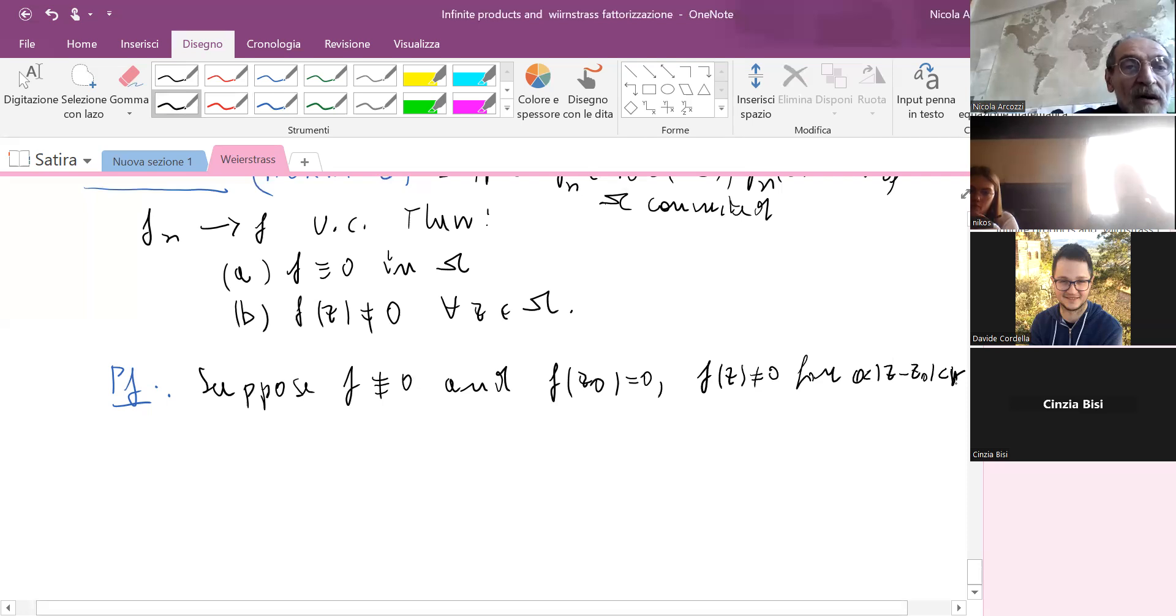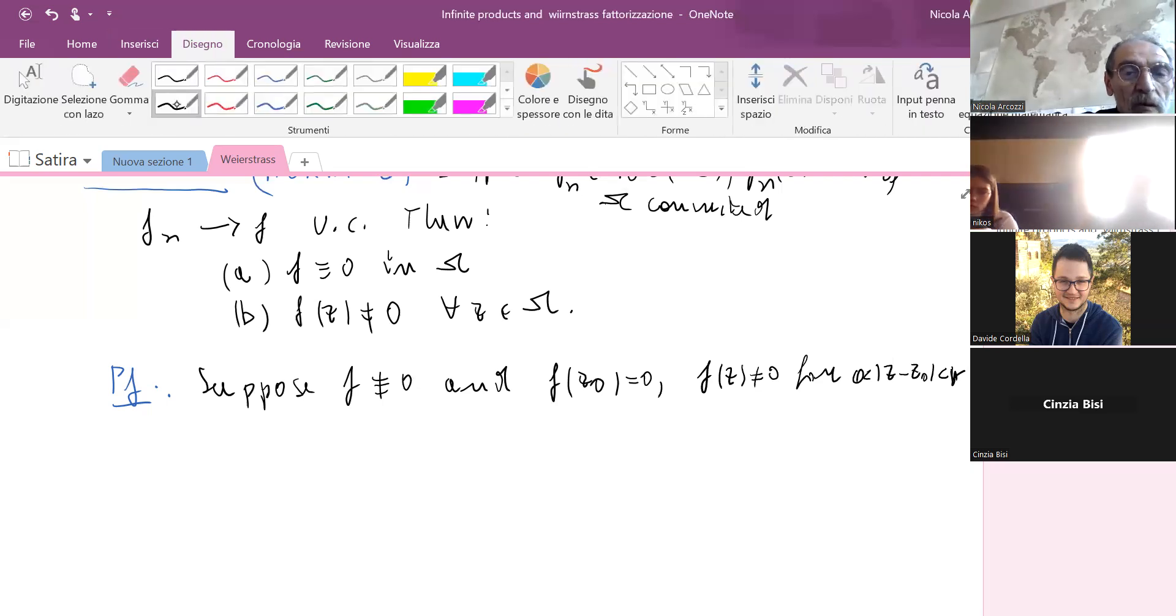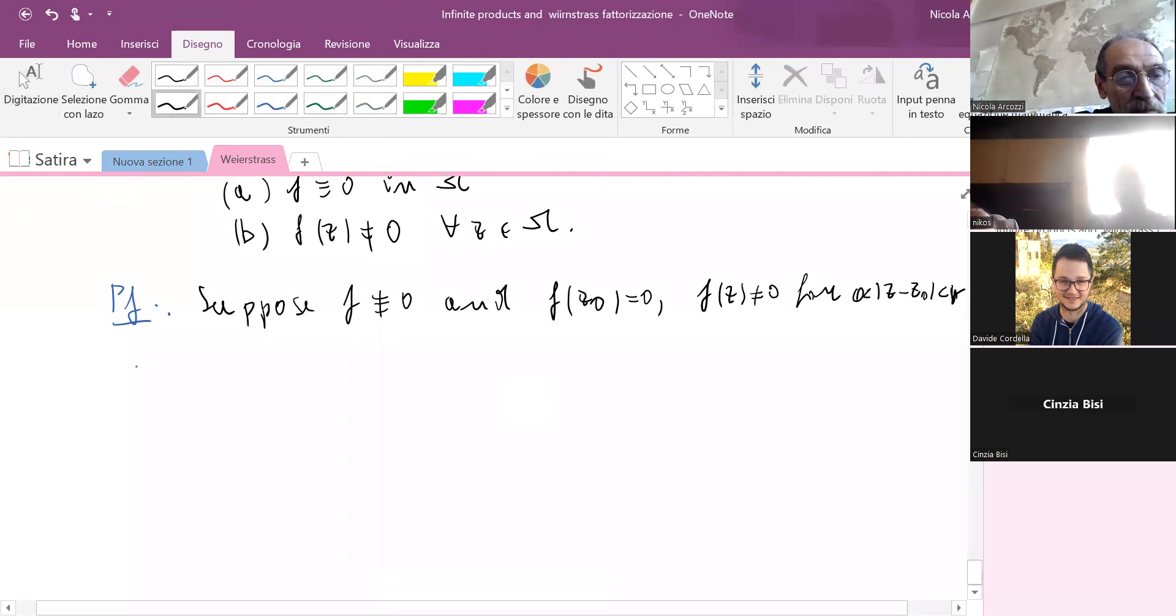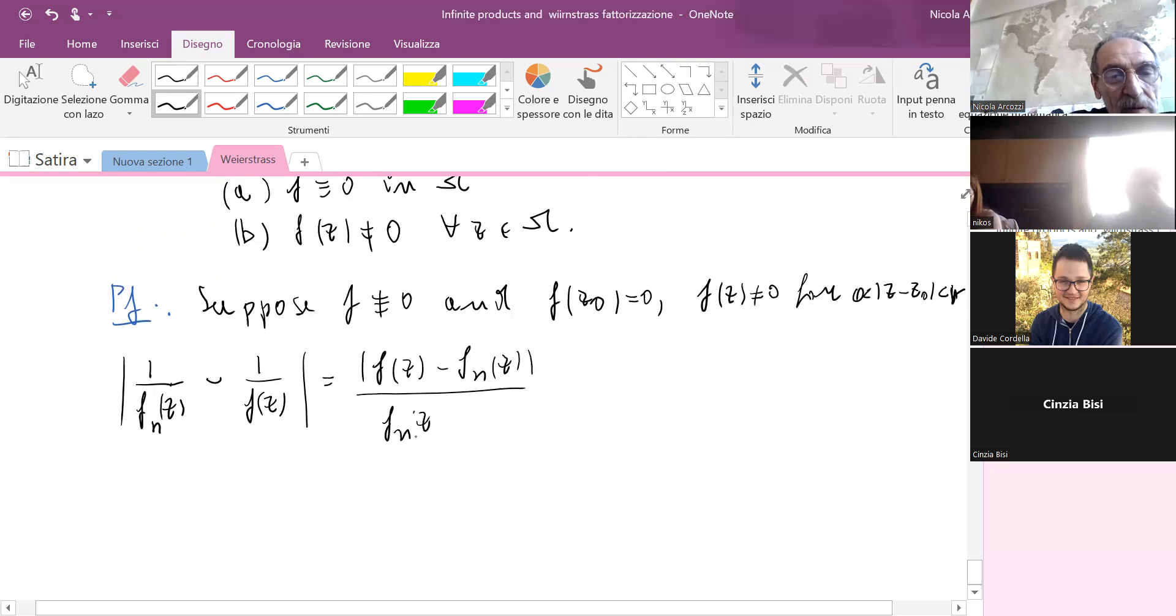And now we estimate. When we consider 1/fn(z) - 1/f(z) for such z, which is like (fn(z) - f(z))/(fn(z)·f(z)), that's less or equal...